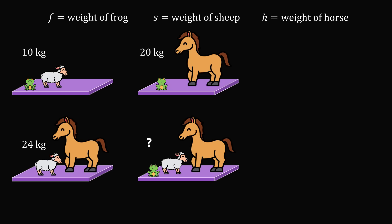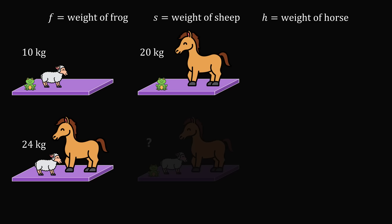Let's go back to the beginning and focus on the three diagrams where we know the weight. What can we say about the number of animals in these three diagrams? We can see the total number of frogs is 2. Then the total number of sheep is also 2. And the total number of horses is also 2. So if we add up all of these weights, we will get two of each animal.